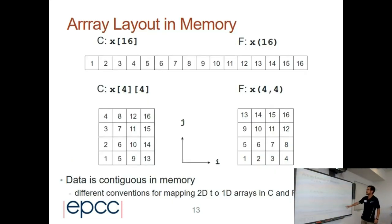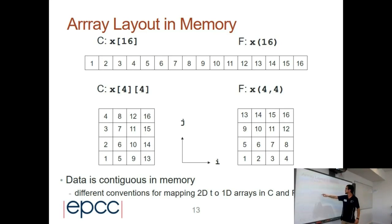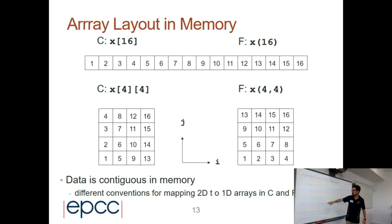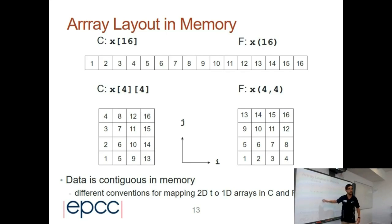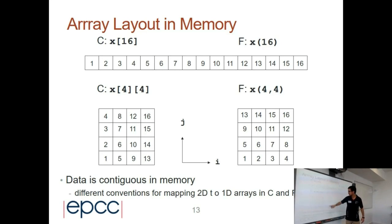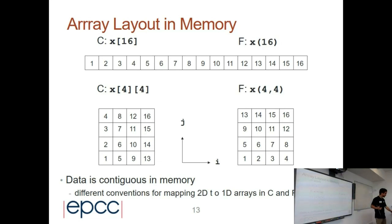We have an array in 1D memory with elements from 1 to 16. In C it is row-major, so if we rotate, the elements go 1, 2, 3, 4, 5, 6, 7, 8, and so on. In Fortran it is column-major, so instead of going in one direction it goes in the other direction. We should take this into account when we define a new data type.